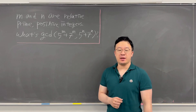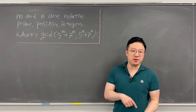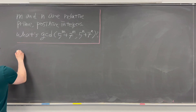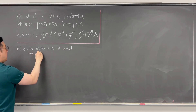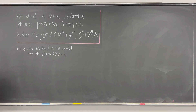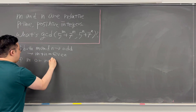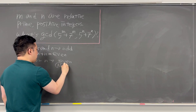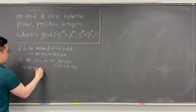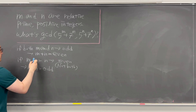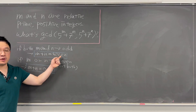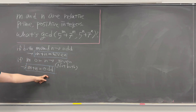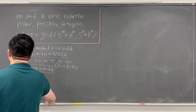We originally identified three cases: both M and N odd; M even and N odd; or M odd and N even. This simplifies to two cases: m + n is even, meaning both M and N are odd; or m + n is odd, meaning exactly one of M and N is even.